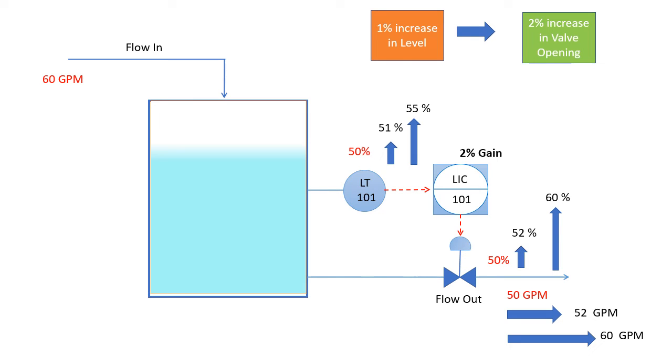So our initial target was 50 percent. Now we are stuck at 55 percent. And at this moment, as flow inlet is equal to flow outlet, there is no further change in level. So there is a 5 percent offset from 50 percent to 55 percent. So how can we minimize this offset?